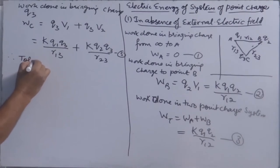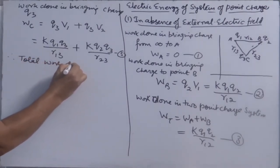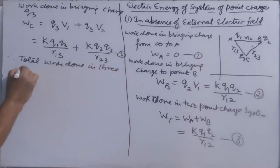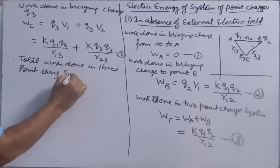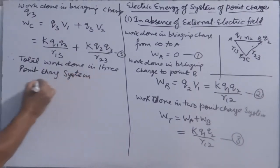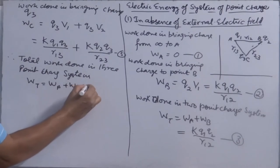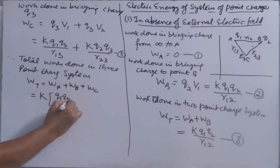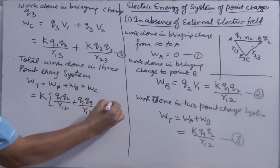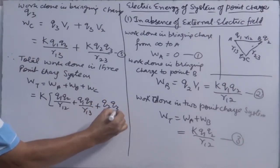Total work done in three point charge system. That is will be equal to WA, WB plus WC. That comes out K, you can take common when we add all these terms. In the bracket, you will have Q1 Q2 over R12, Q1 Q3 over R13 plus Q2 Q3 over R23.